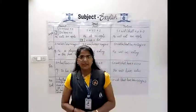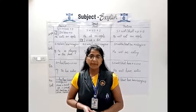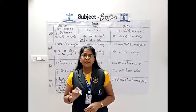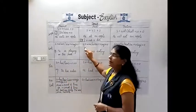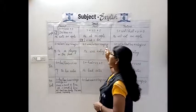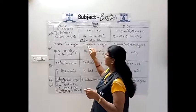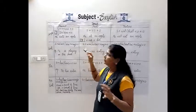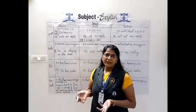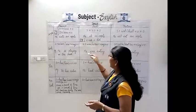Now look at past continuous tense — an action going on at some time in the past. Example: 'My father was watching the match last evening.' Structure: subject plus was/were plus V1-ing plus object. 'Was' comes with singular subjects like he, she, it, or a name; 'were' comes with plural subjects like we, they. Example: 'He was eating.'